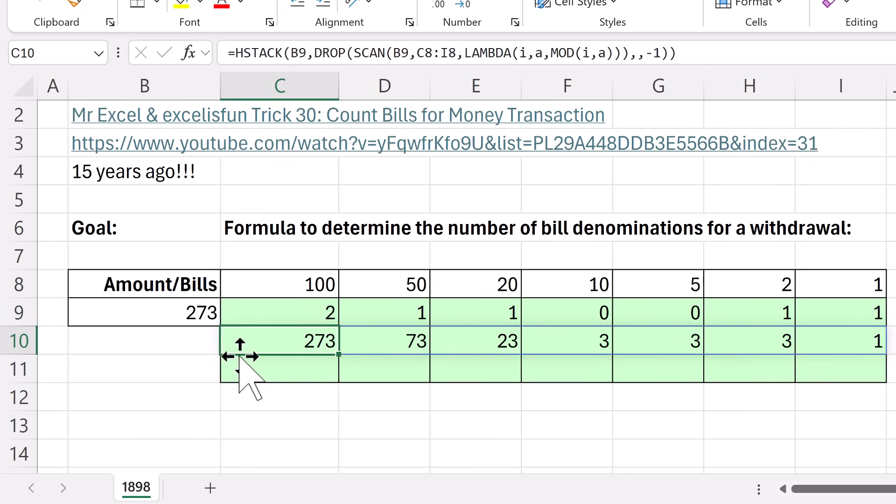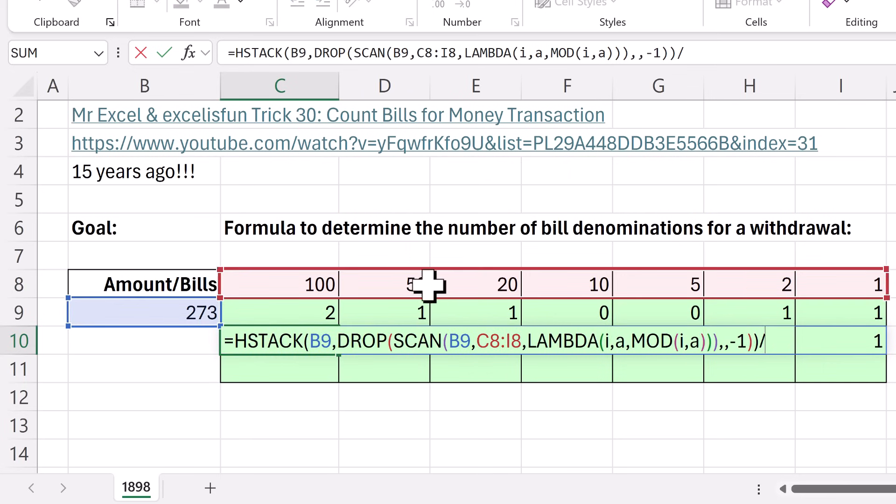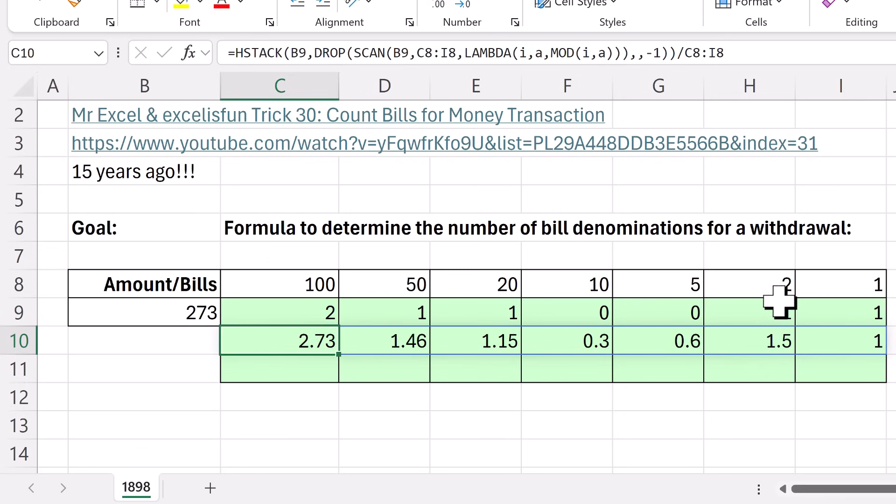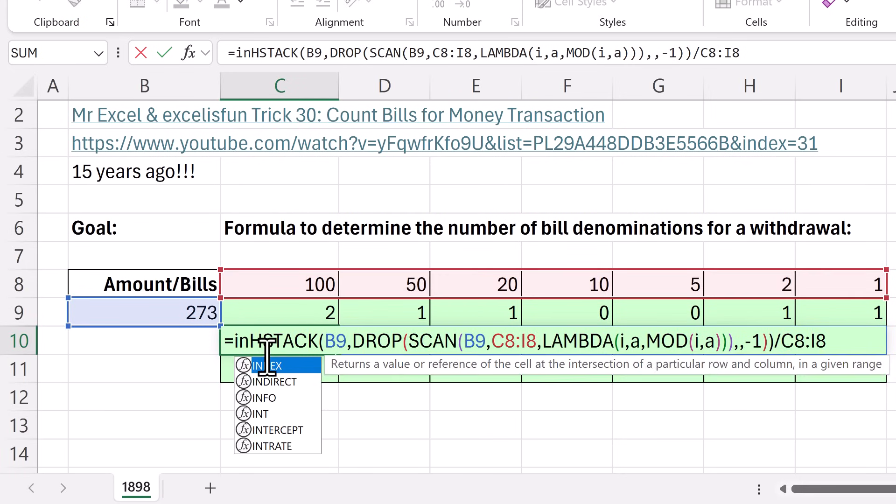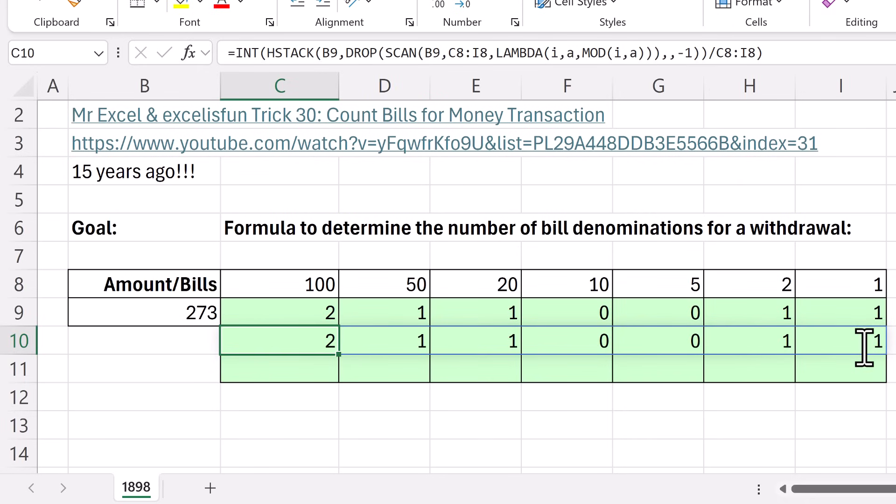And now it's as simple as pi. We take all of these values, divide by the denominator, and int it. Divide by. Control enter. 2110011. F2. Well, that's easy enough with int. Close. Control enter. And sure enough, we have spilled and got the number of bills needed for 273.